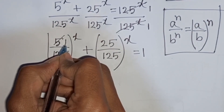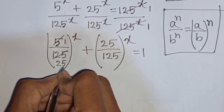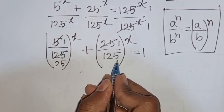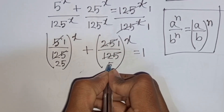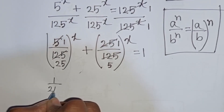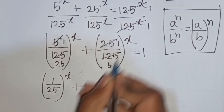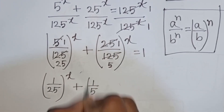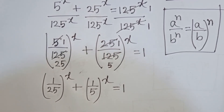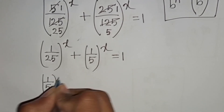Now 5 divided by 125 means it will be 1 over 25, and 25 divided by 25 means it will be 1, and 125 divided by 25 means it will be 5. So we have (1 over 25) power x plus (1 over 5) power x is equal to 1. Now 1 by 25 can be written as (1 by 5) power 2.